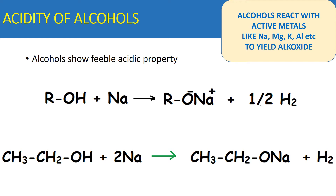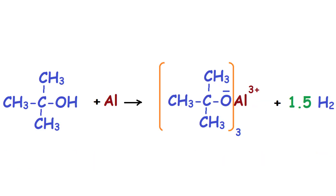When ethanol reacts with sodium, it gives sodium ethoxide and hydrogen. Here the alcohol reacts with sodium to give alkoxide — RO minus — and H plus, with hydrogen being replaced by the active metal sodium, forming alkoxides. Similarly, if methanol reacts with sodium it gives methoxide; if ethanol reacts with sodium it gives ethoxide. For example, tertiary butyl alcohol reacts with aluminium to form aluminium tertiary butoxide and hydrogen, where hydrogen is replaced by the aluminium three-plus ion.